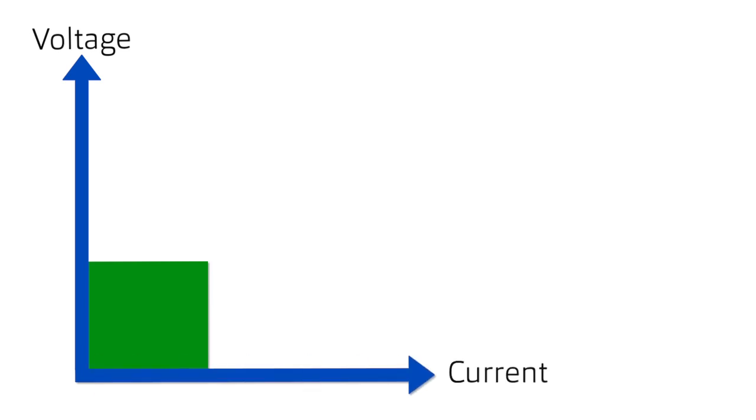The operating range of the conventional single-range power supply is represented here as a green box. The vertical line represents the available voltage range, while the horizontal line represents the available current.